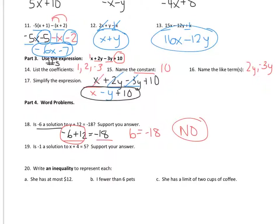Number nineteen — is negative 1 a solution? So: is negative 1 plus 4 equal to 5? The left-hand side is 3. Does 3 equal 5? No. So it's not a solution — it's false.